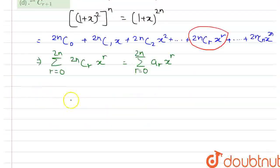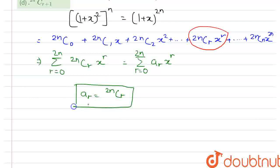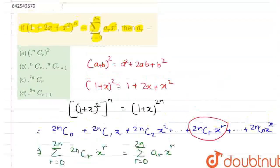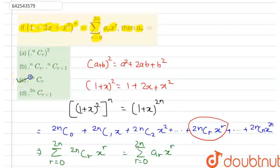we get the value of aᵣ as ²ⁿCᵣ. So this is the value of our aᵣ which is option number c.